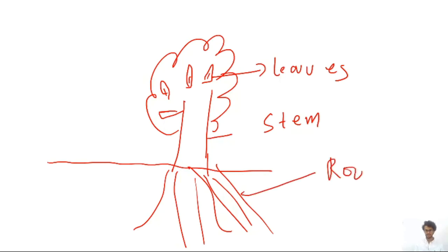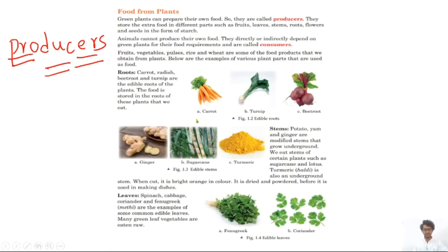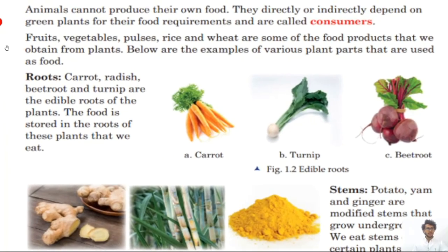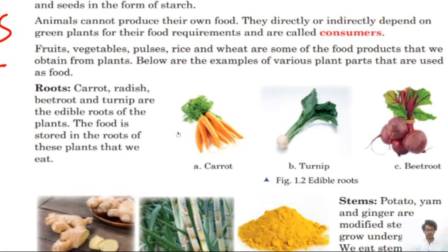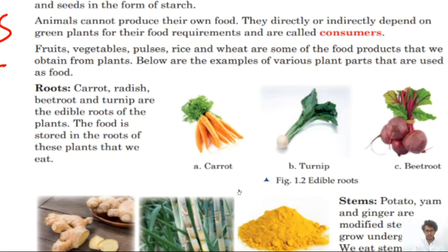Roots: carrot, radish, beetroot, and turnip are the edible roots of the plant. I hope you all know what a carrot is — that orange thing with the green part on top. The orange part is actually the root of the carrot; we eat the root, not the leaves. Edible means things that we can eat.